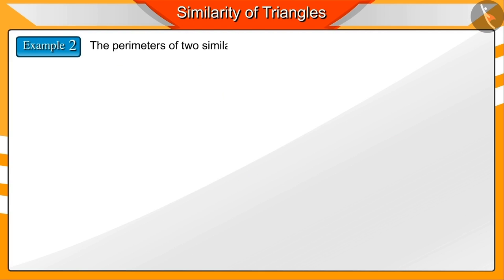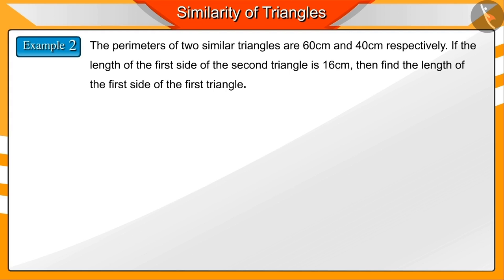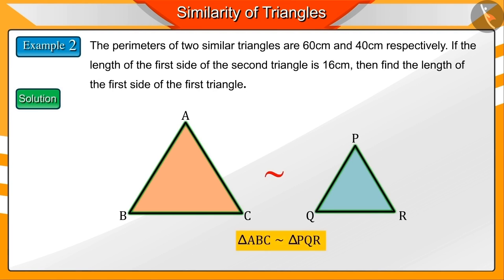The perimeters of two similar triangles are 60 cm and 40 cm respectively. If the length of the first side of the second triangle is 16 cm, then find the length of the first side of the first triangle. Let us suppose that triangles ABC and PQR are the similar triangles given in the question.